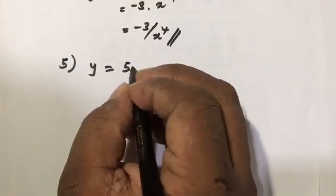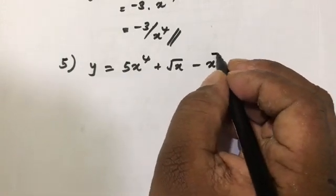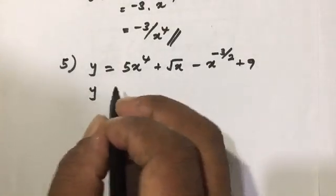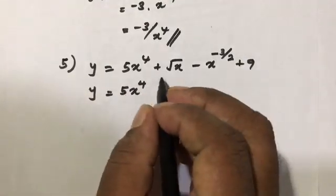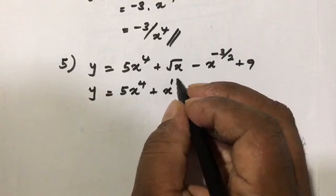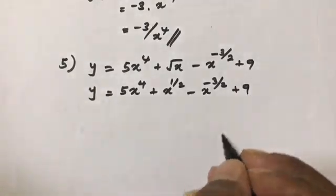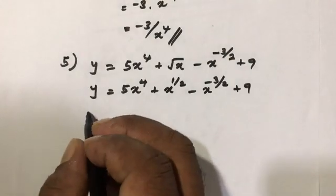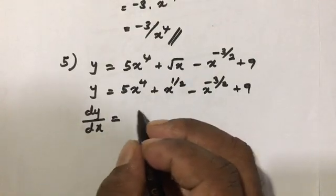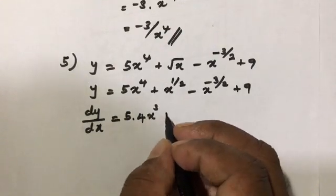Example number five: y equals 5x to the fourth plus square root x minus x to the minus 3/2 plus 9. We rewrite square root x as x to the 1/2, giving y equals 5x to the fourth plus x to the 1/2 minus x to the minus 3/2 plus 9. Now differentiating with respect to x using the power rule: 5 times 4 times x to the third plus...